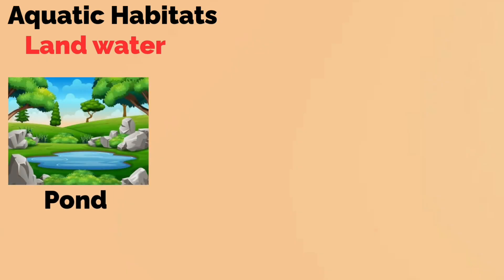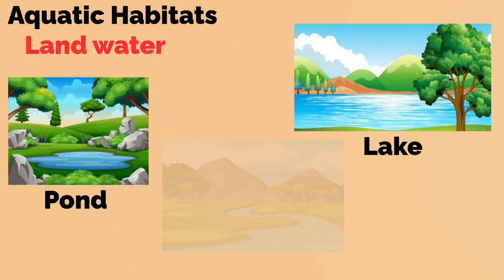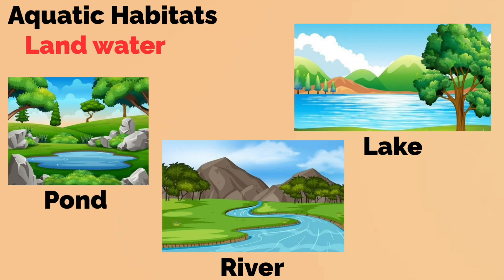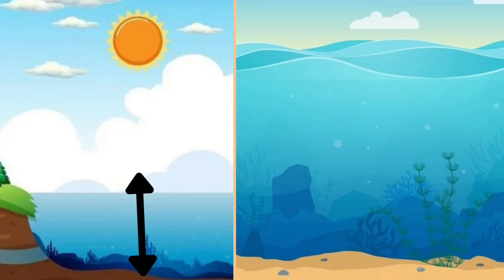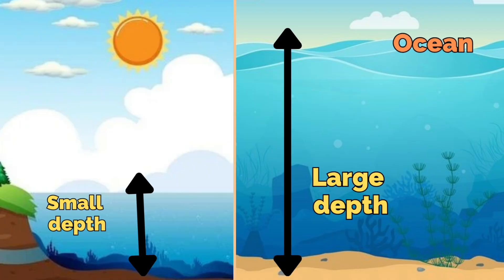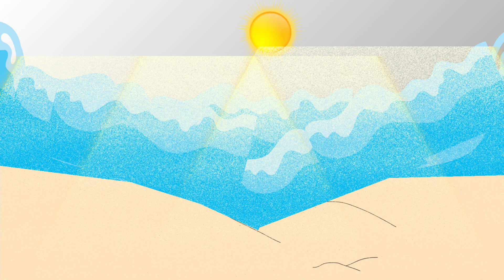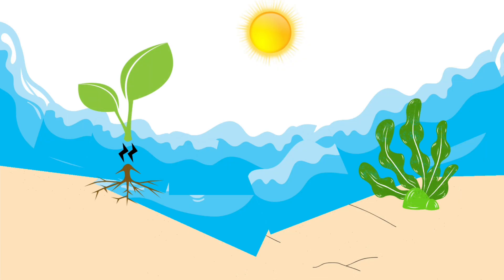Freshwater basically exists in ponds, lakes, rivers, and so on. The depth of these water bodies is very small compared to the ocean, which allows sunlight to reach the bottom, making it possible for some plants to grow there.